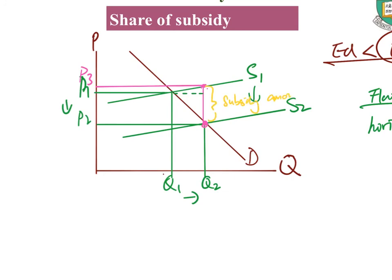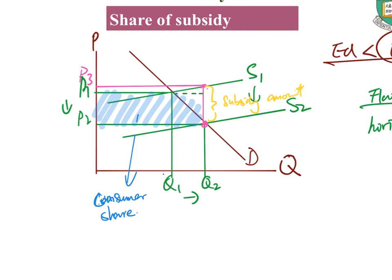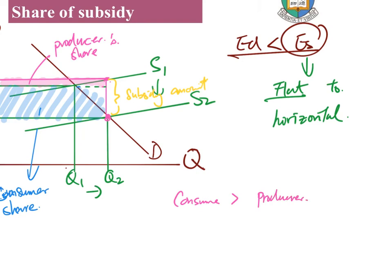In the exam you don't need to draw the full subsidy amount — just identify the consumer share as the distance between the prices P1 and P2, and the producer share as the remaining area. In Case 2 we find that the consumer has a larger share than the producer. The key conclusion is: the party with less elasticity will get a bigger share — or bigger burden — of the subsidy.